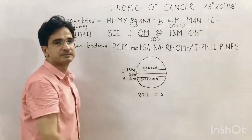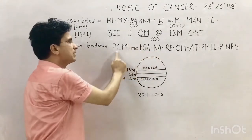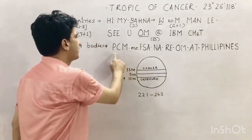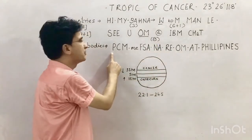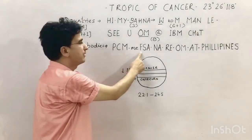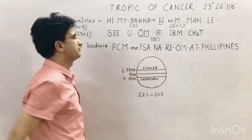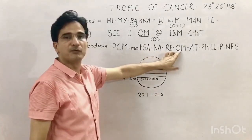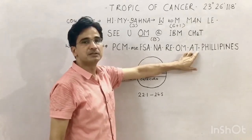For the water bodies through which the Tropic of Cancer passes, the trick is 'PCM mein fasa naare OM at Philippines.' P stands for Pacific Ocean, C for Gulf of California, M for Gulf of Mexico, F for Florida Strait, S for Sargasso Sea (the sea without a land boundary), E for Atlantic Ocean, N for Lake Nasser Egypt, Red Sea, OM for Gulf of Oman, A for Arabian Sea and Indian Ocean, T for Taiwan Strait (or Formosa Strait), and then Philippines Sea.